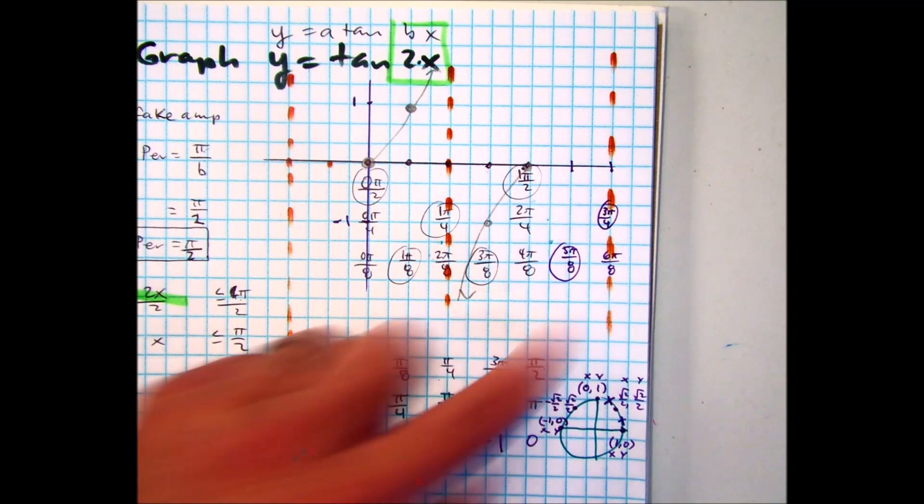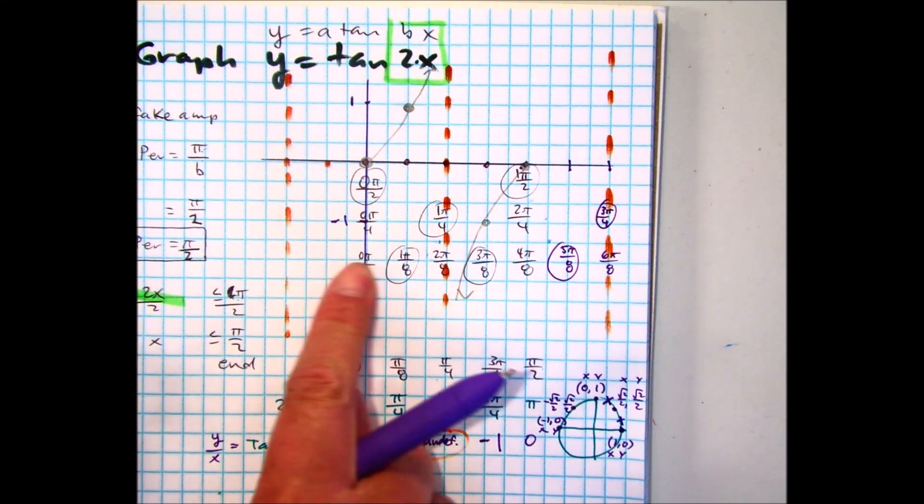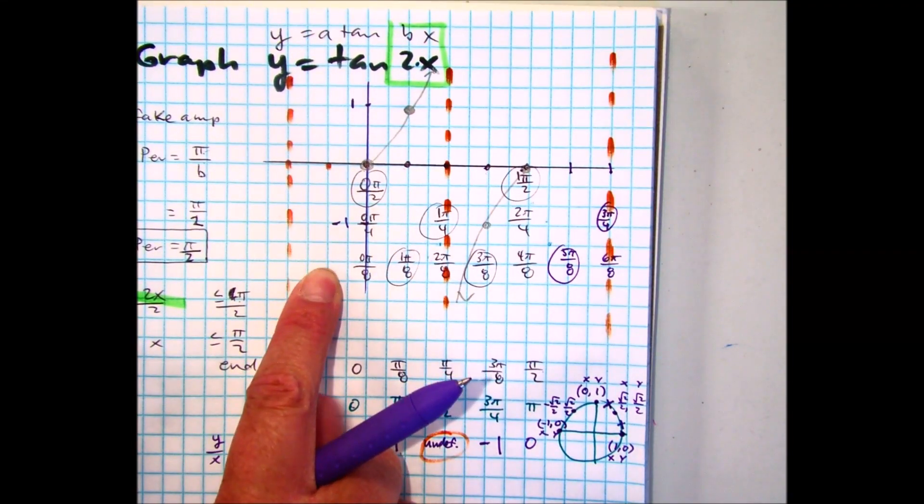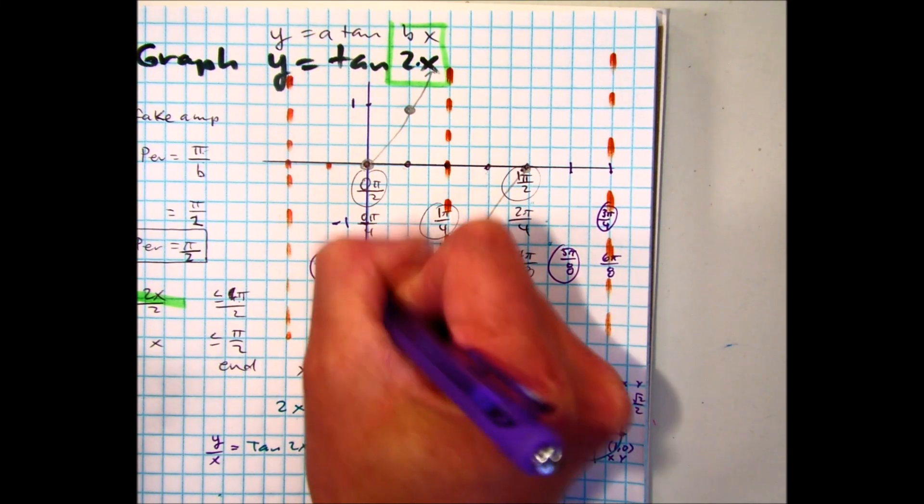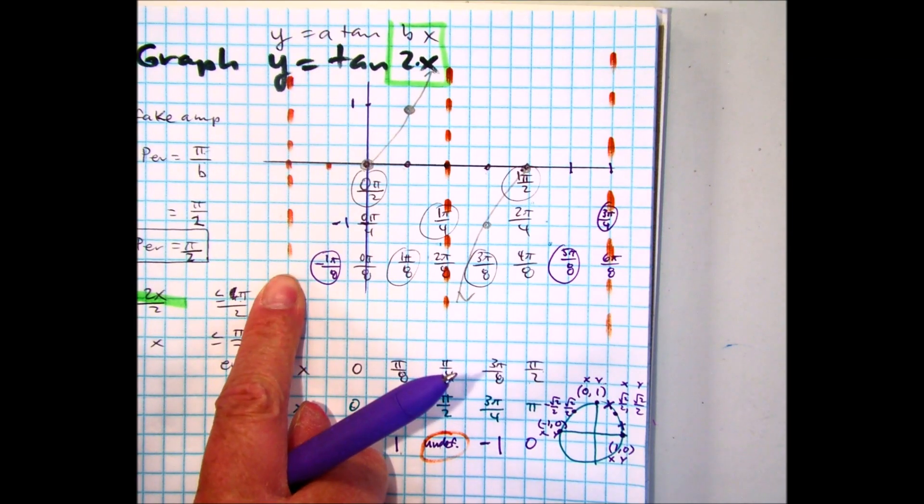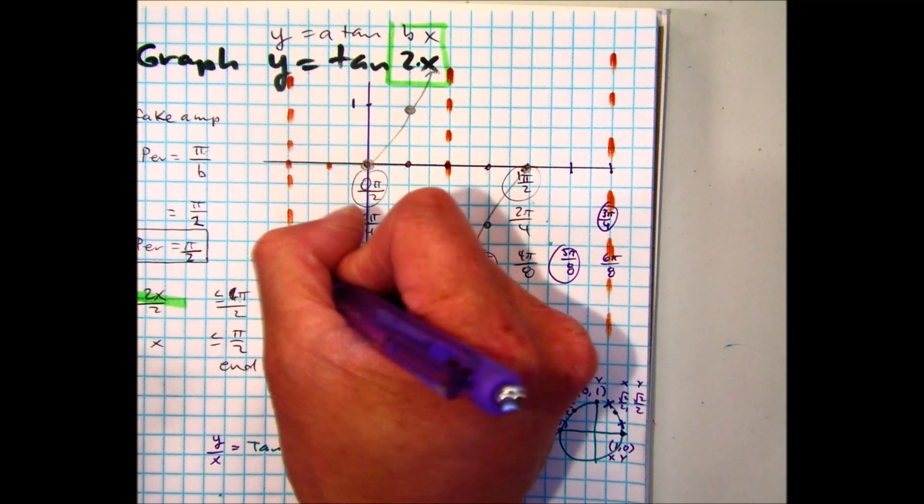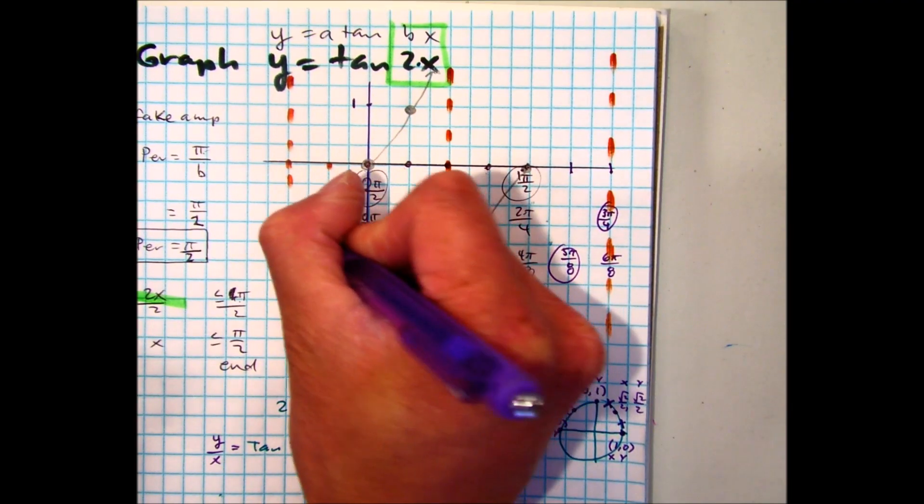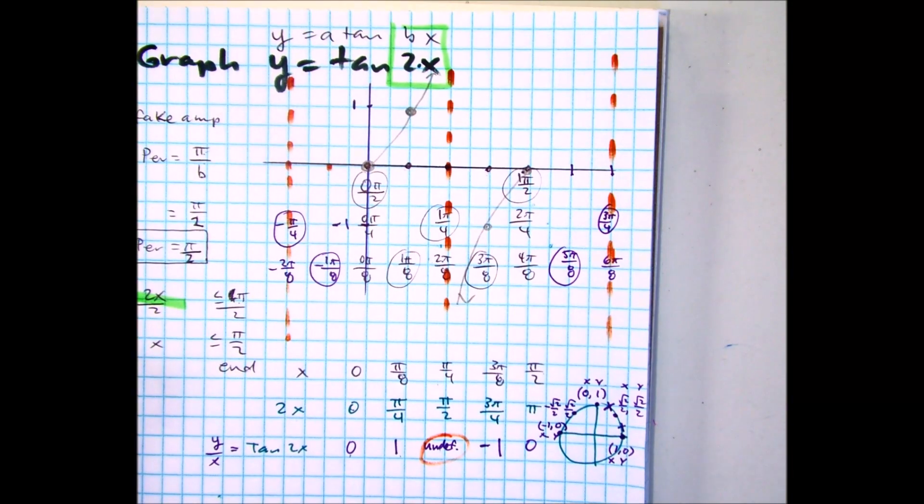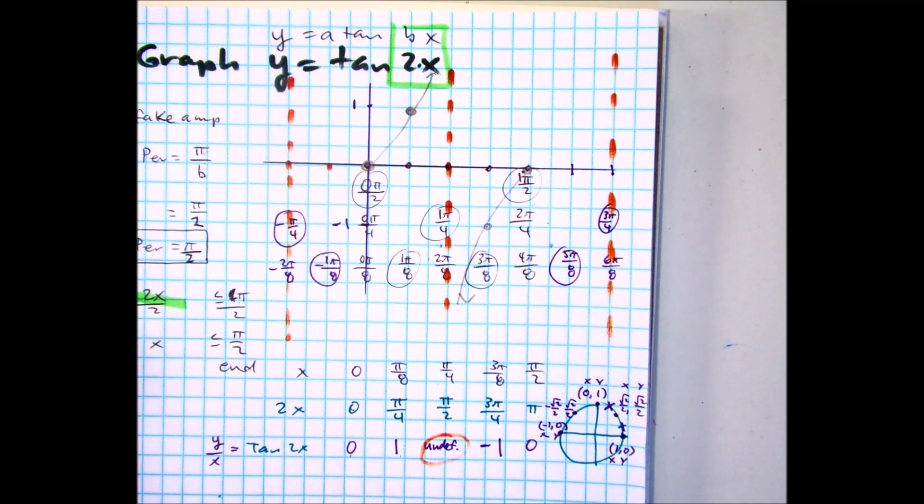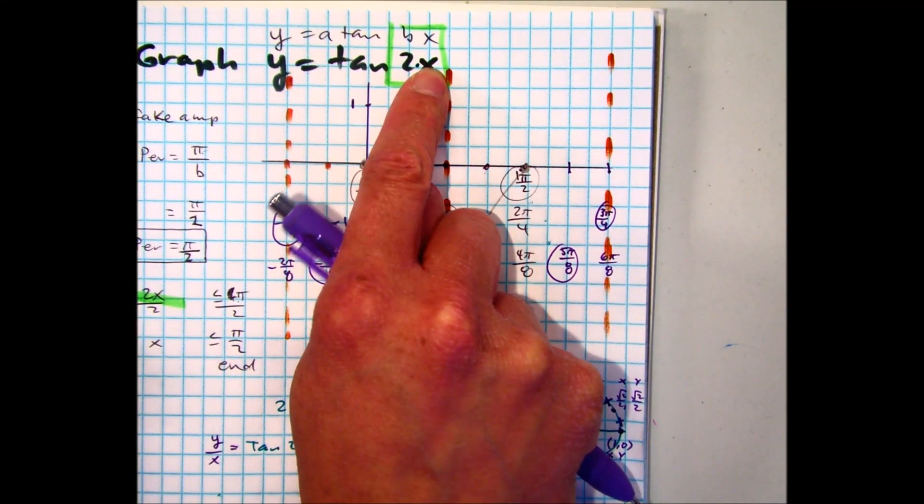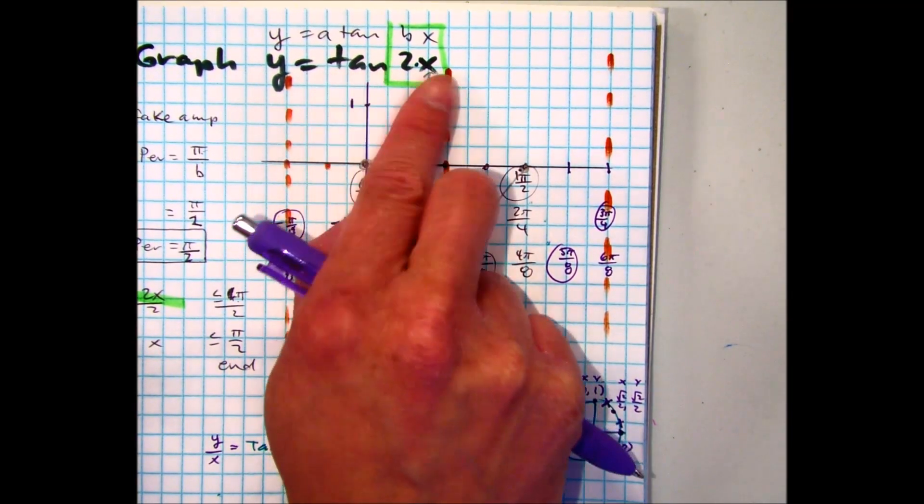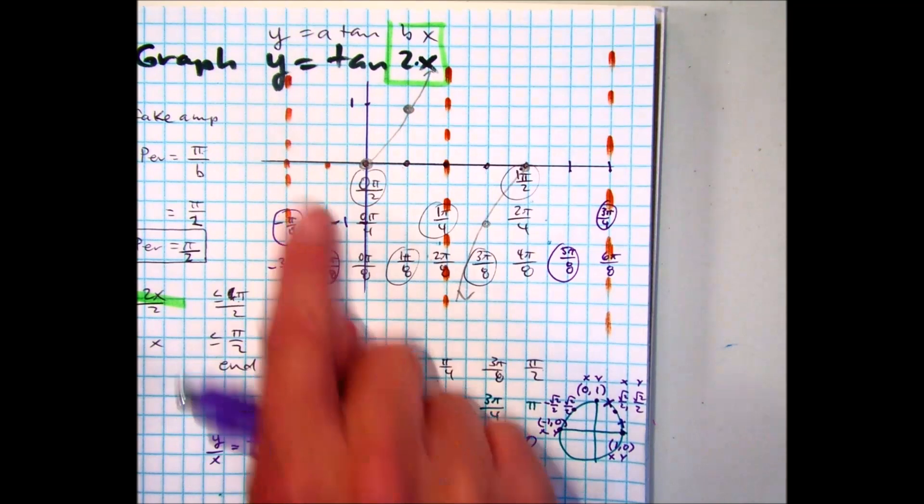3 pi over 4. Do you see that? How about this one here? Negative 1 pi over 8. And how about this one? Negative 2 pi over 8, which is negative pi over 4. You can actually take this and do the same thing we did. You can put it in here, multiply by 2, and find the tangent of that value, and you'd recognize that it's an undefined.